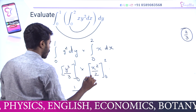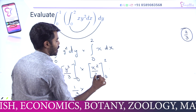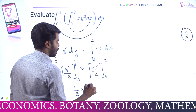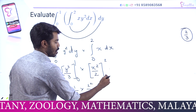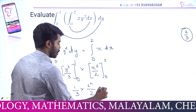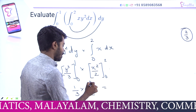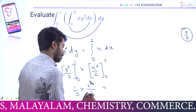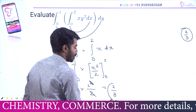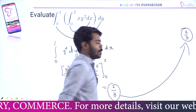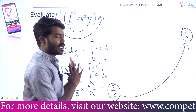x² by 2, upper limit: 2² by 2. Lower limit: zero — completely zero. So we get 1 by 3 into 2, which equals 2 by 3. Both methods give the same answer.